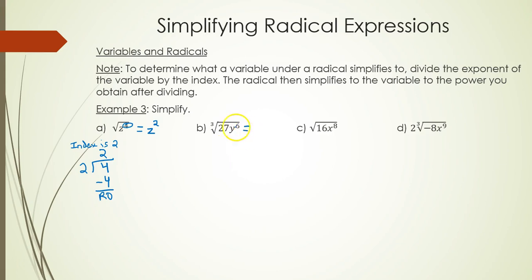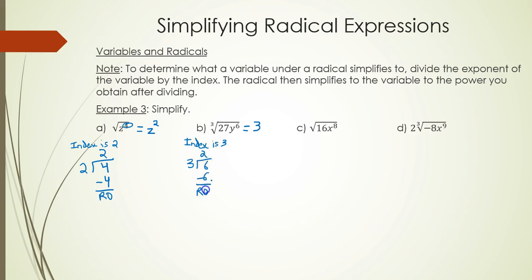Part B: the cube root of 27 is 3. Using an index of 3, how many times does 3 go into 6? Twice, with a remainder of 0. So there should be no y's remaining under the radical, and the answer will be 3y squared.